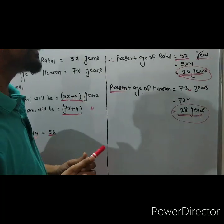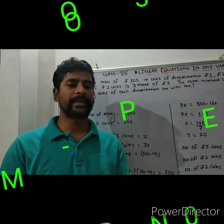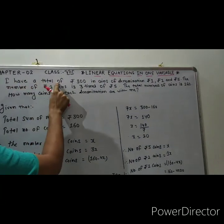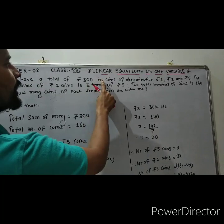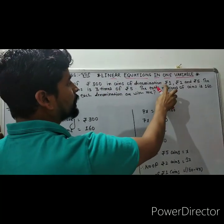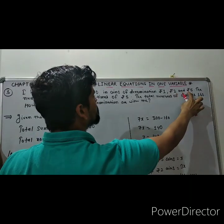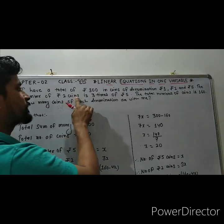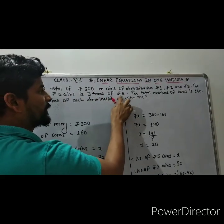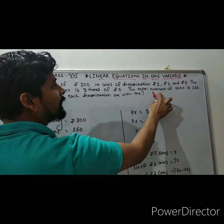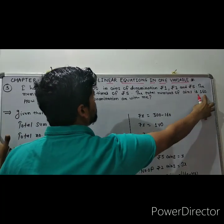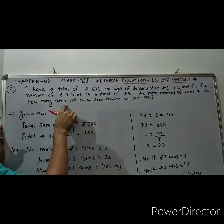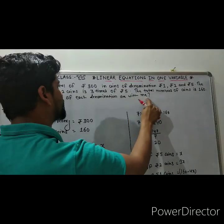Now look at question number 3: I have a total of Rs. 300 in coins of denomination Rs. 1, Rs. 2, and Rs. 5. The number of 2 Rs. coins is 3 times the number of 5 Rs. coins. The total number of coins is 160. How many coins of each denomination are with me?